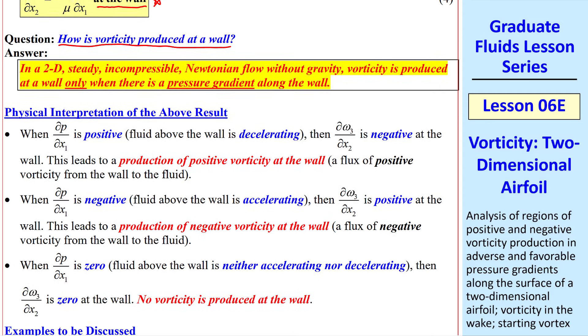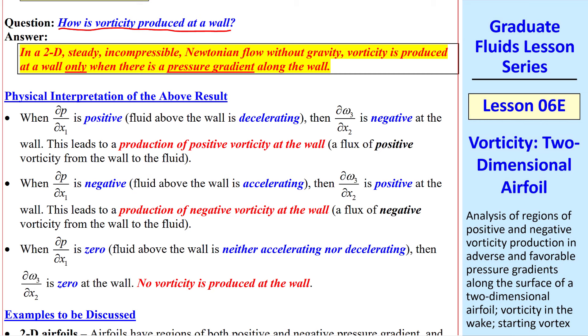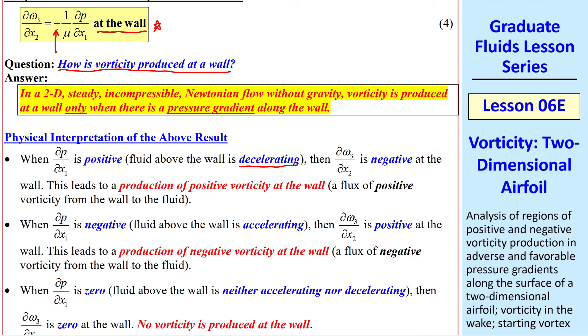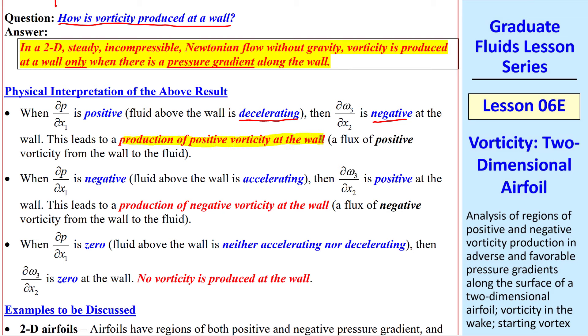Here's a physical interpretation of this answer. When ∂P/∂X1 is positive, in other words, the fluid directly above the wall is slowing down or decelerating, then because of the negative sign in this equation, the slope of vorticity is negative at the wall. This leads to a production of positive vorticity at the wall.